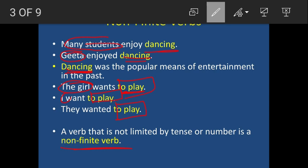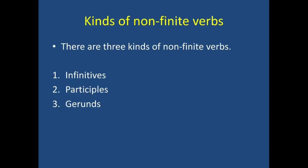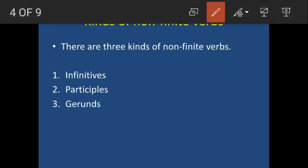I hope you have understood the difference between finite and non-finite verbs. Now let us see the kinds of non-finite verbs. There are three kinds: first is infinitive, second is participle, and third is gerund. We will learn all three in detail one by one.